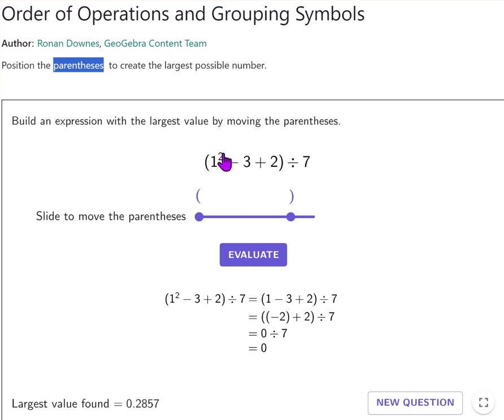Now what will happen here first, it will be 1 squared which is 1. Then it will take 3, which is minus 2, and then plus 2. And so you get 0 divided by 7. So that's where the 0 comes from.